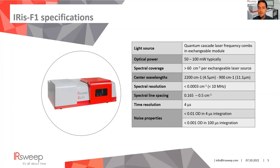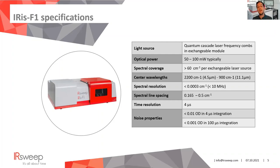Some numbers: you typically have about 50 to 100 milliwatts of optical power. The spectral coverage of a single laser module is 60 wavenumbers, going up to 100 wavenumbers for some modules. You can choose modules centered anywhere between approximately 2200 and 900 inverse centimeters. The spectral resolution of each individual comb line is about 3×10⁻⁴ inverse centimeters, and the spacing between lines is 0.3 wavenumbers. Time resolution is 4 microseconds, with a noise floor of about 0.01 OD, or down to 10⁻⁵ absorption units with longer integration.